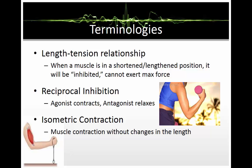The length-tension relationship can likely be explained by the interactions between two underlying mechanisms: the active and the passive length-tension relationships. In simplistic terms, when a muscle is either in a shortened or a lengthened position, it will be inhibited, which means that it cannot exert a maximum force.